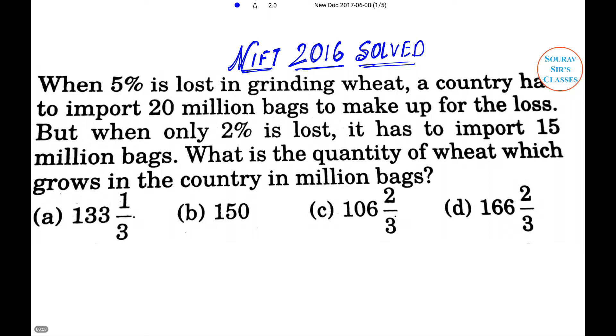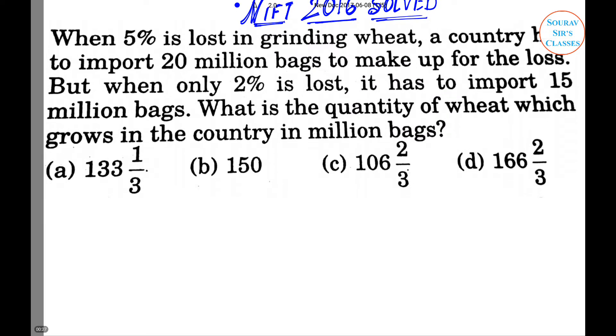The first problem: When 5% is lost in grinding wheat, a country has to import 20 million bags to make up for the loss. But when only 2% is lost, it has to import 15 million bags. What is the quantity of wheat which grows in the country in million bags?